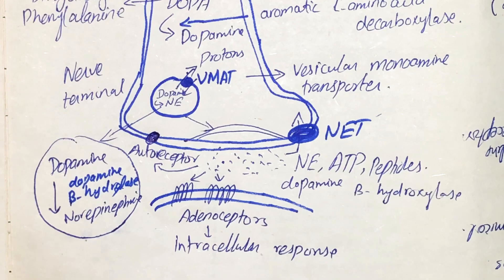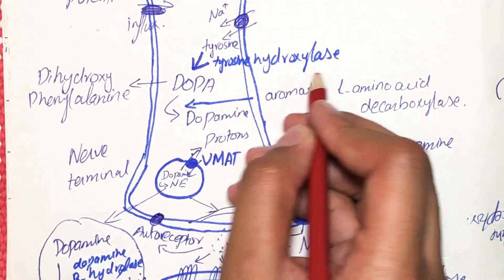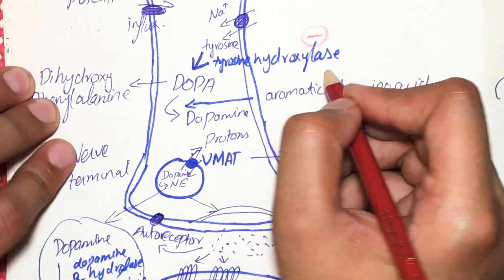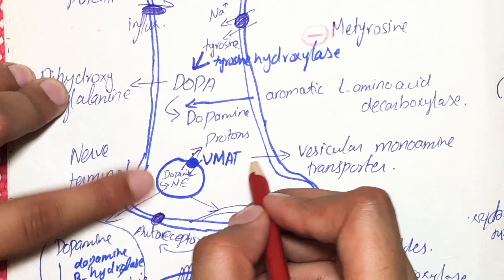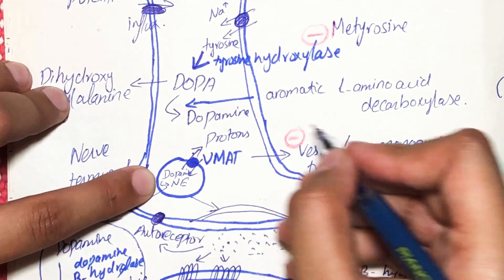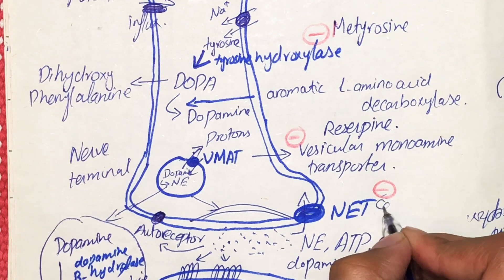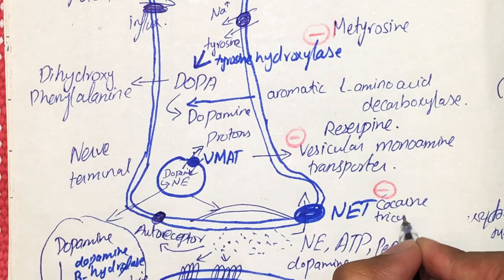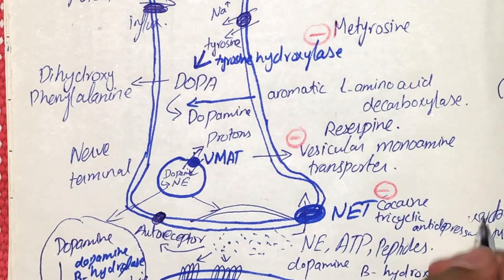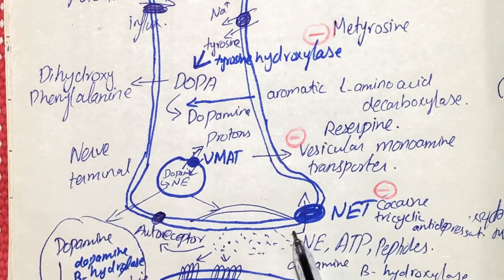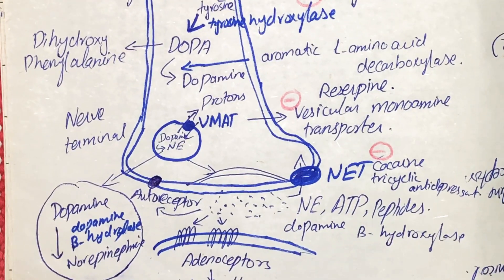Various drugs act on these enzymes and transporters. Methyrosine inhibits tyrosine hydroxylase. Reserpine inhibits VMAT, blocking dopamine transport into vesicles. Cocaine and tricyclic antidepressants inhibit the NET transporter, resulting in more norepinephrine remaining in the synaptic cleft and increased intracellular response — this is how tricyclic antidepressants and cocaine act.